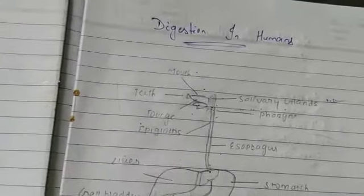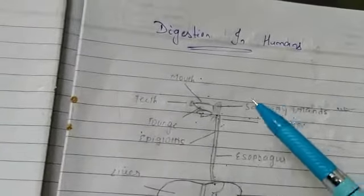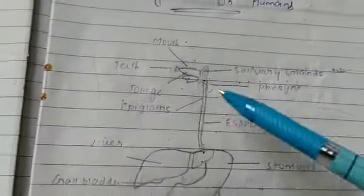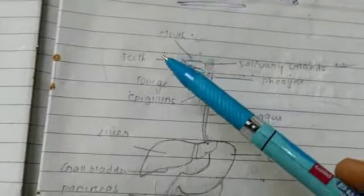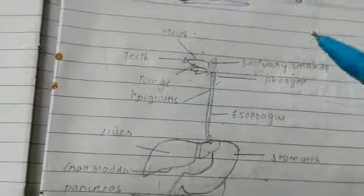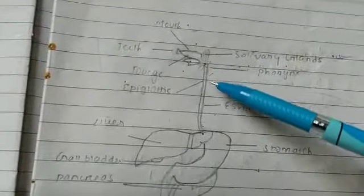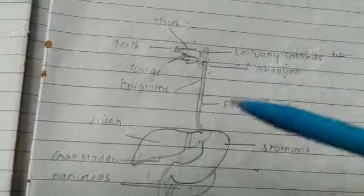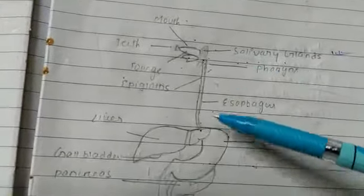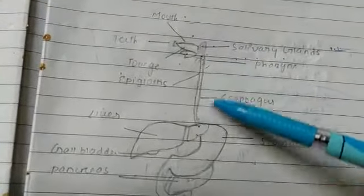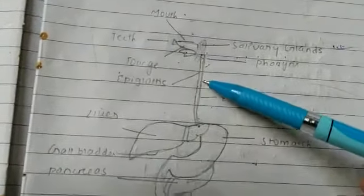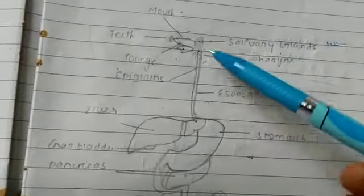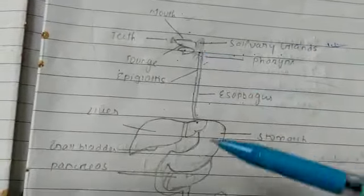In the previous class we studied about digestion in humans — the human digestive system — covering the mouth, that is teeth, tongue, and salivary glands. Today we will study about the oesophagus. The oesophagus is also known as the food pipe. It is a tube-like structure, 30 cm long, and it connects the mouth to the stomach.